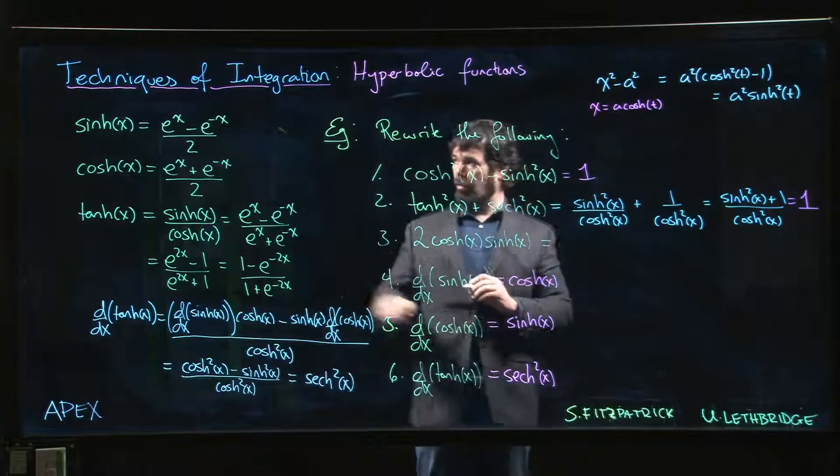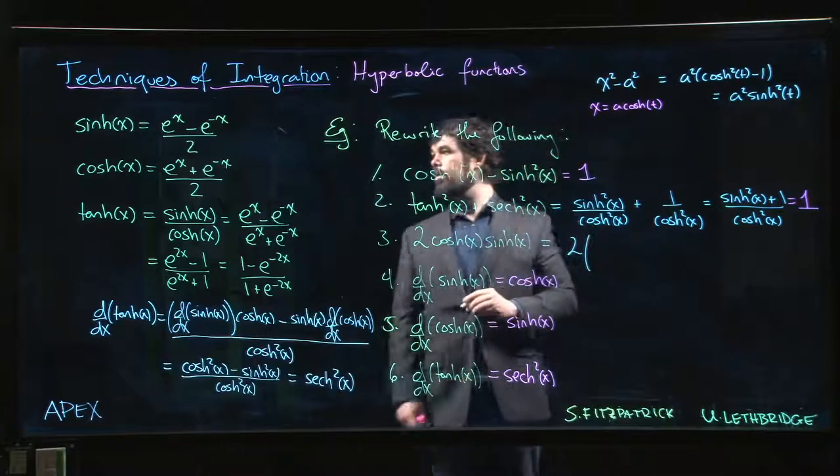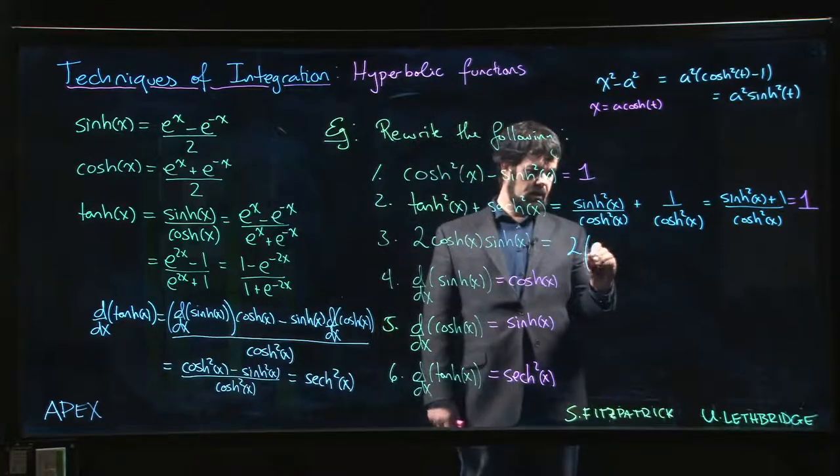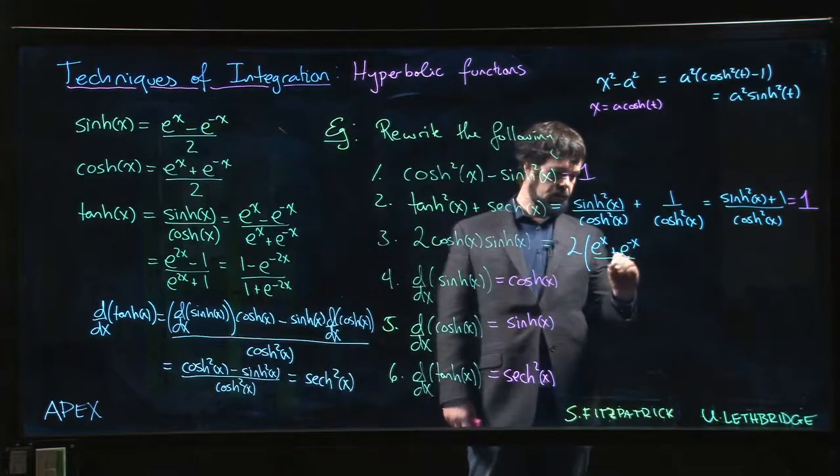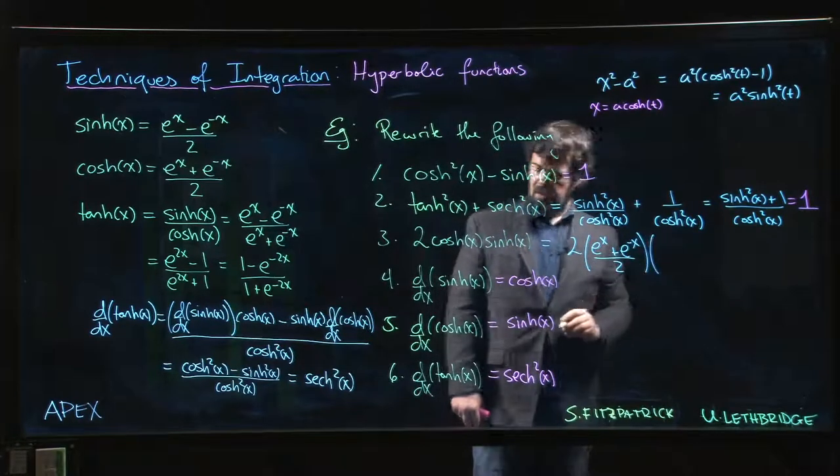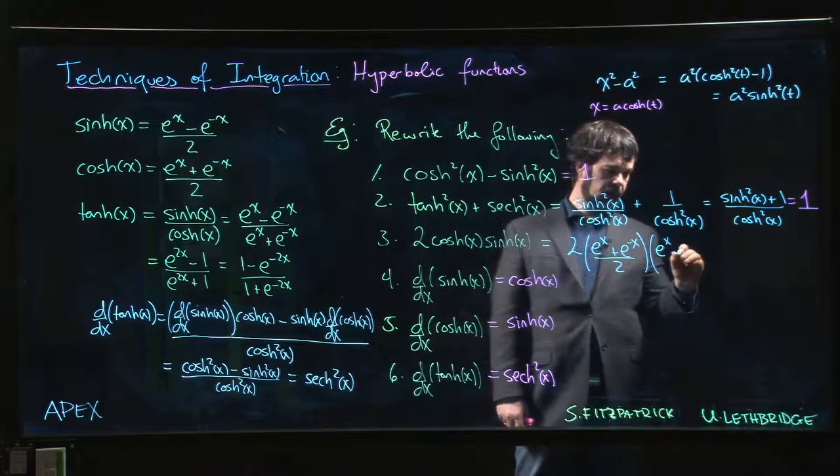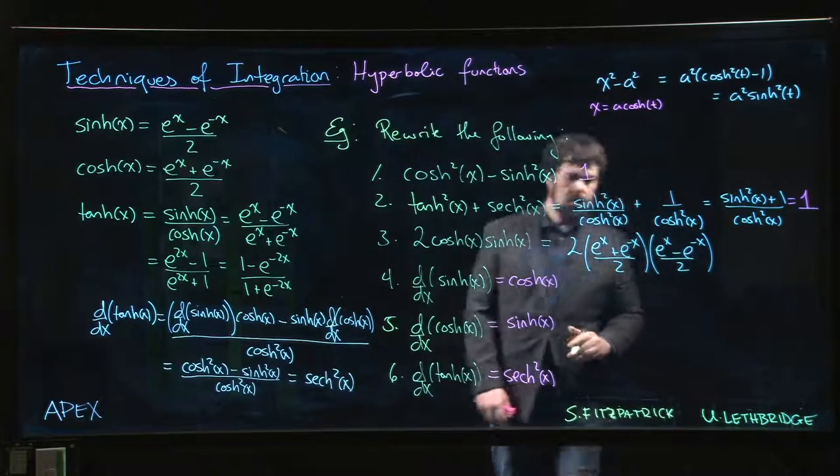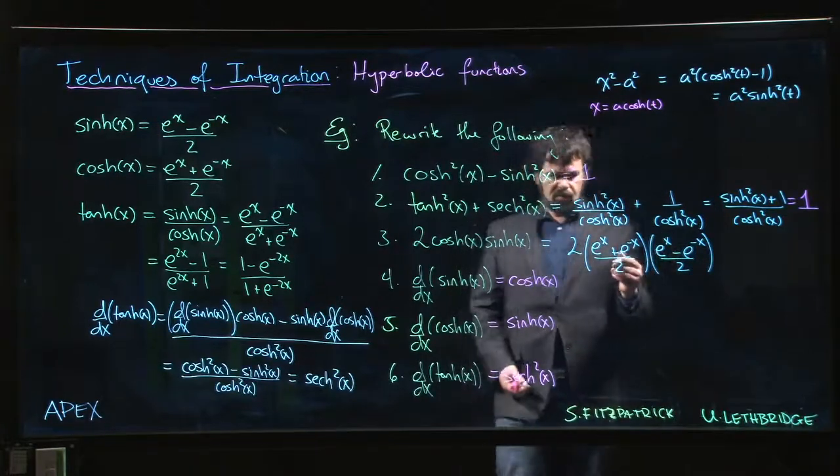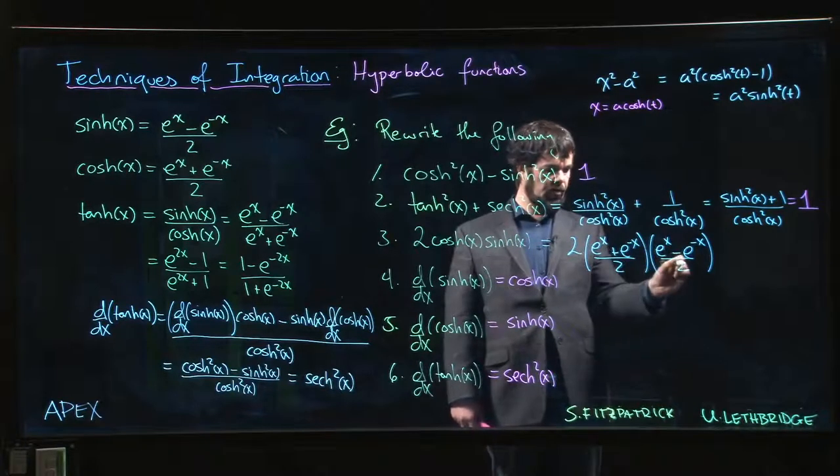One left to go. Let's give it a try. For this one I think we have no recourse but the definitions. So we have two times - this is going to be e to the x plus e to the minus x over two - and then for hyperbolic sine, e to the x minus e to the minus x over two. That's just a difference of squares in the numerator, so that's the difference of squares, we have two squared on the bottom times two.